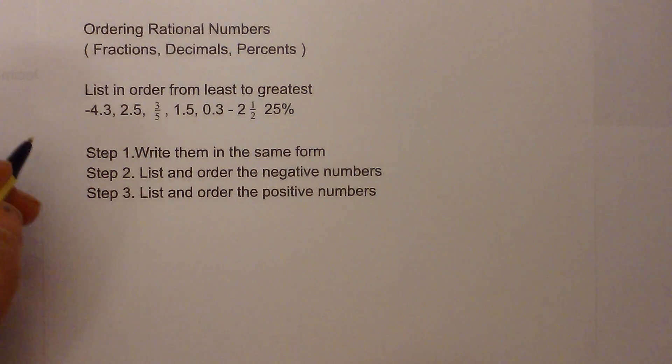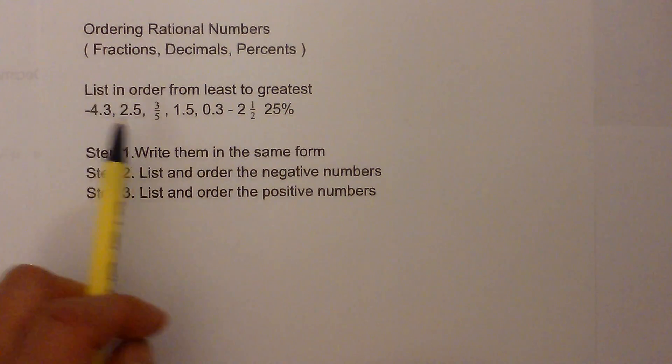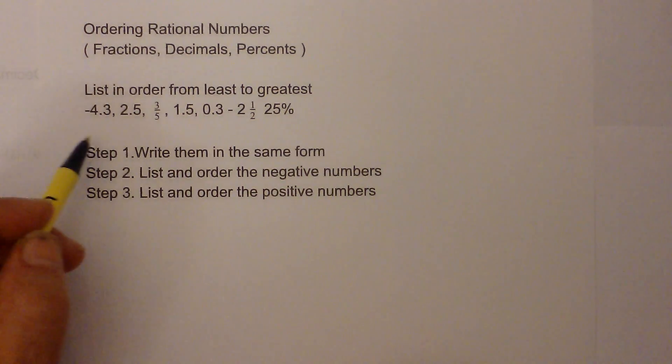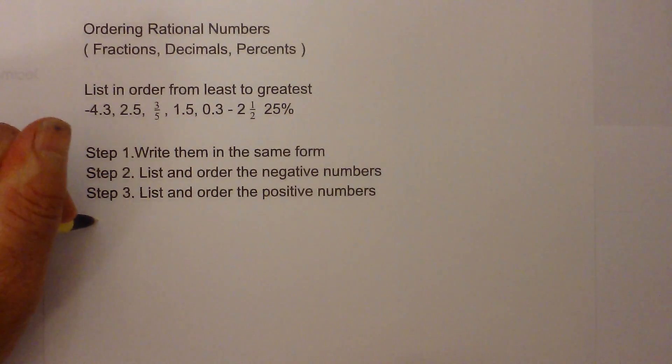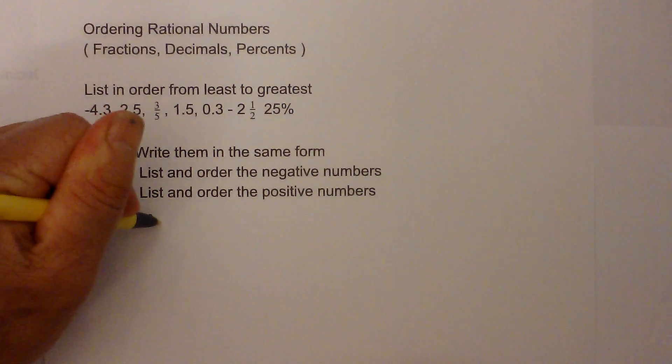So let's get started. The form I think is the easiest is just go ahead and convert them to a number with a decimal. So I am going to do that. So negative 4.3, don't have to do much there, 2.5, pretty easy.